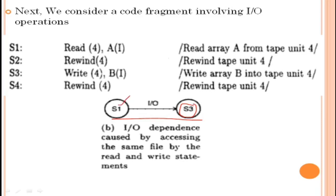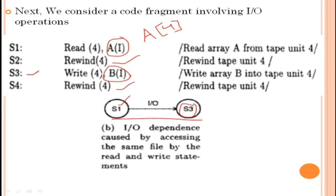Statement S1 reads array A from unit 4 — we are reading the 4th element of array A. Statement S2 rewinds the content of A at position 4. Statement S3 writes array B onto tape unit 4. So we are writing the value of array B into tape unit 4.